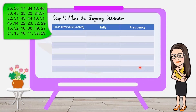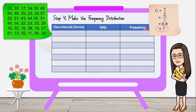Step 4: Make the frequency distribution. To make a frequency distribution, create a table showing the class interval of the scores, the tally, and the frequencies. Start with the first class interval — it must contain the lowest score. Our class size is 7 and our lowest score is 10, so we count 7 units from 10: 10, 11, 12, 13, 14, 15, 16. Therefore, our first class interval is 10 to 16.